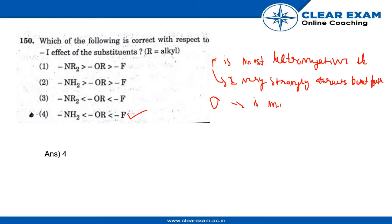O is also a highly electronegative element — not the most, but the second most electronegative element — and it is very strong in attracting the bond pair of electrons.